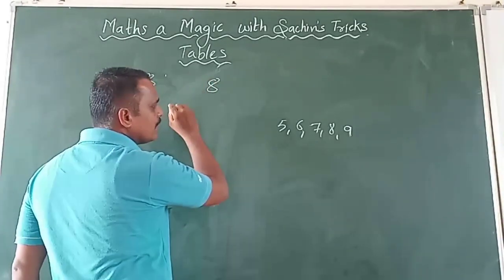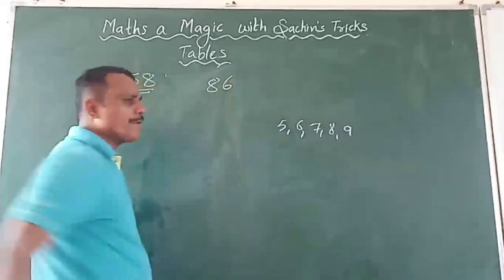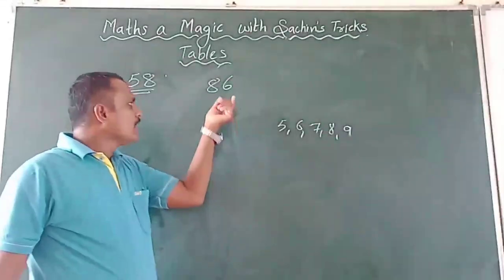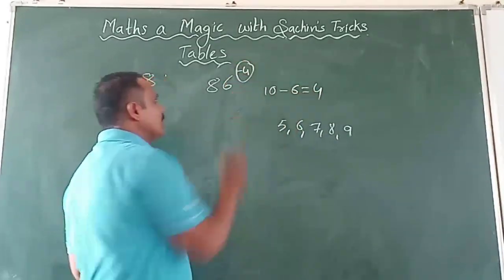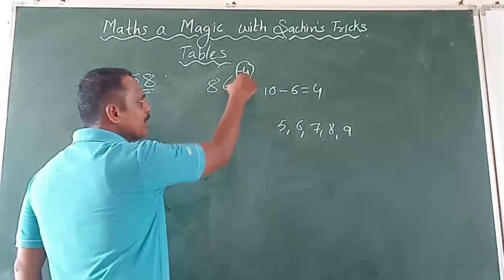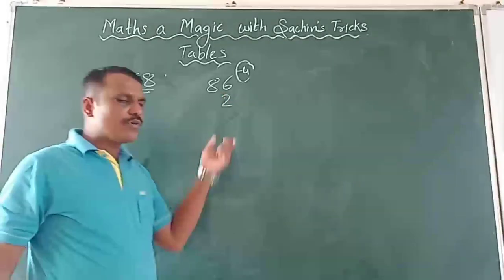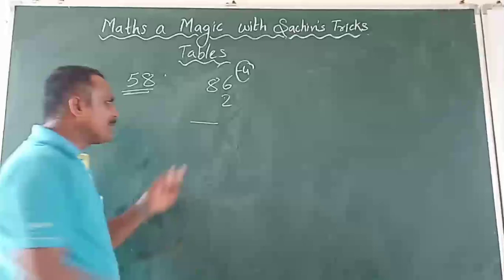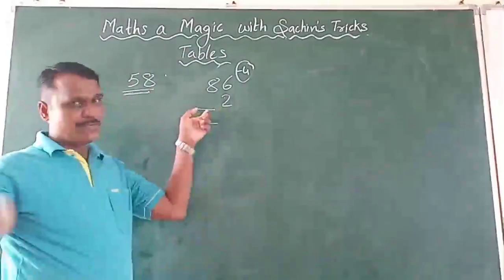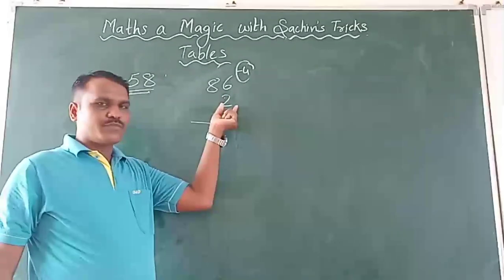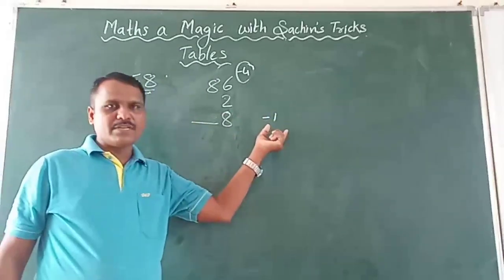Suppose we take 86. Now 6 is at the unit place, so 10 minus 6 is 4 — I will subtract 4 each time. Starting: 6 minus 4 is 2. Now 2 minus 4 is not possible, so I borrow — but remember, borrow from the next tens place, not from here; if you take it from here the answer will be wrong. So 2 becomes 12, and 12 minus 4 is 8. I put minus 1 as a reminder.